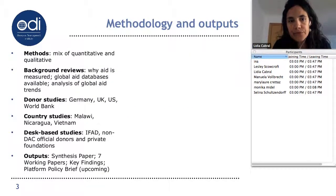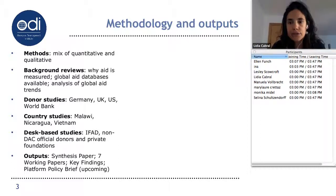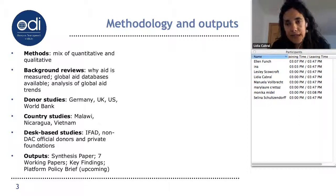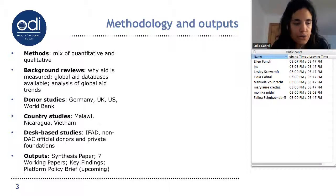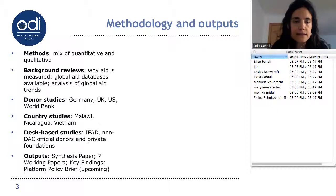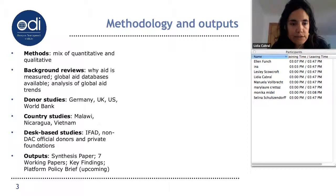In terms of methods and outputs, we drew on a mix of quantitative and qualitative methods. The work comprised background reviews on why aid is measured, on the global aid databases available, and analysis of global aid trends. In terms of case studies, we undertook four donor studies on the practices of individual donor agencies — the German agencies, the UK, the US, and the World Bank. We also undertook three country case studies on Malawi, Nicaragua, and Vietnam, complemented by desk-based studies on IFAD and non-DAC official donors and private foundations.